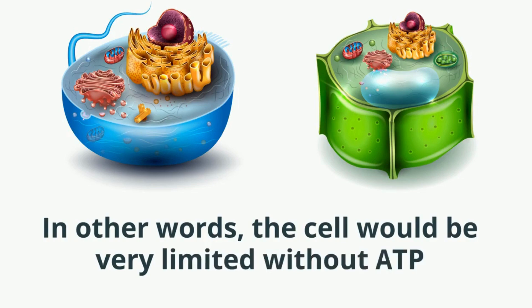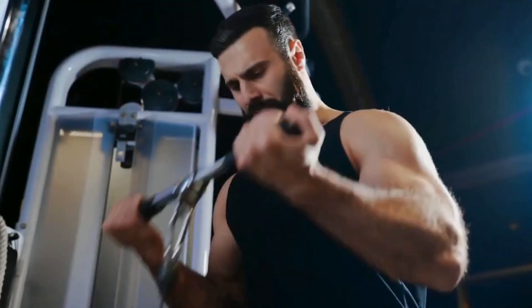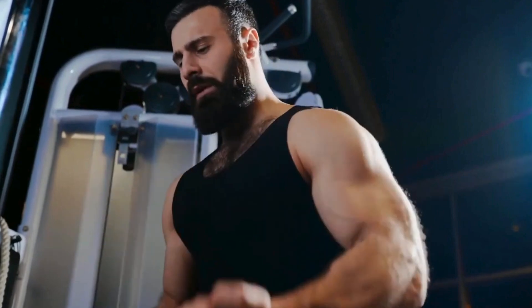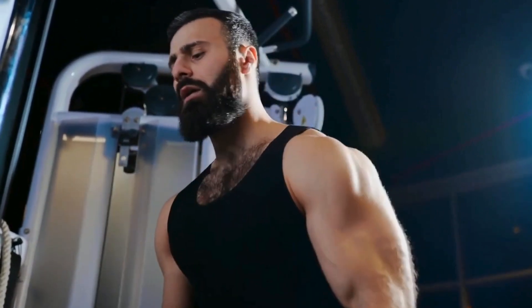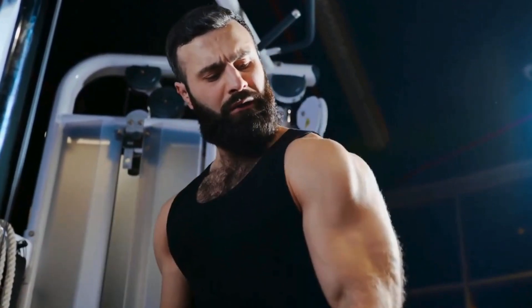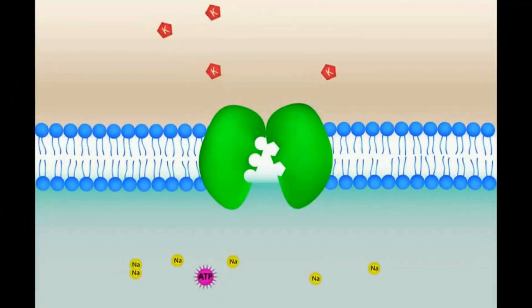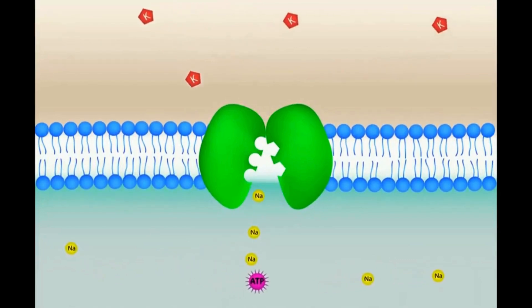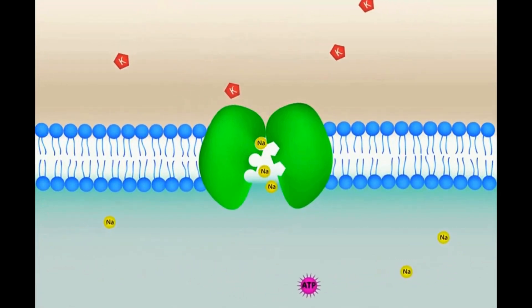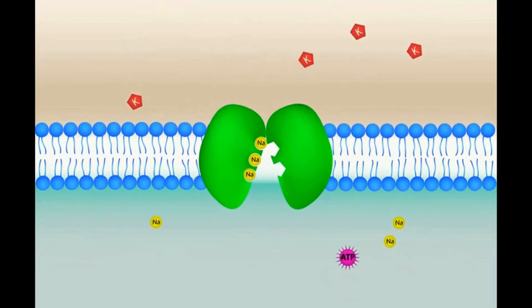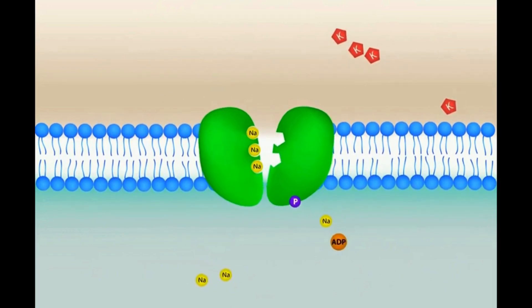ATP is critical for the contraction of muscles. ATP supplies the energy to move the muscle proteins. ATP is essential for certain pumps, like the sodium-potassium pump and the calcium pump. The sodium-potassium pump ensures that our cells have the correct amount of sodium and potassium, which is essential to stay alive.